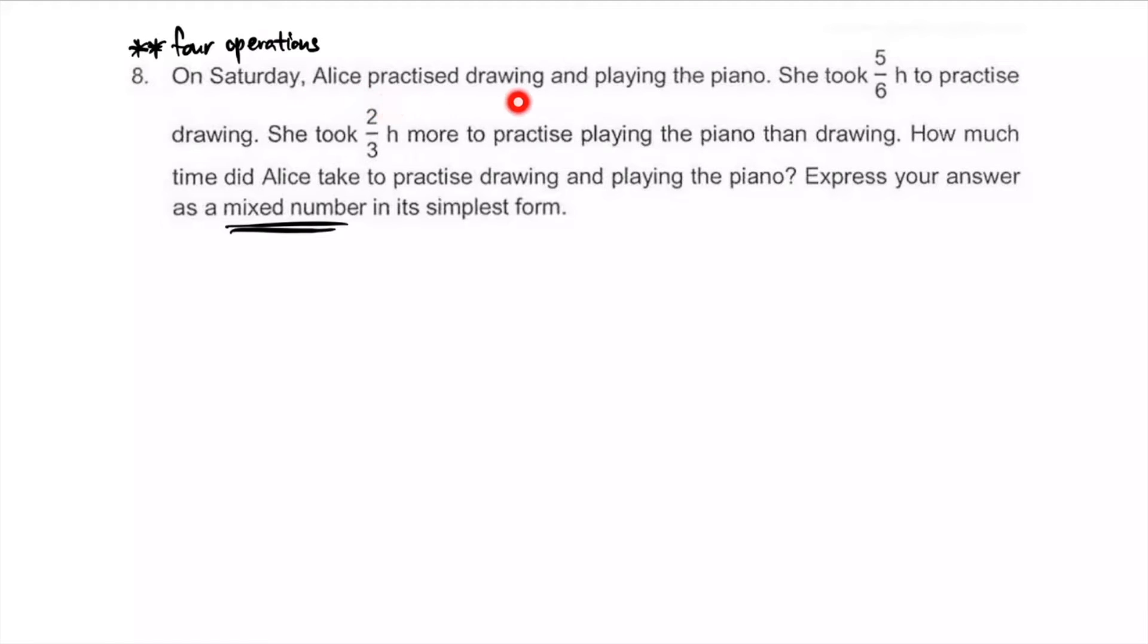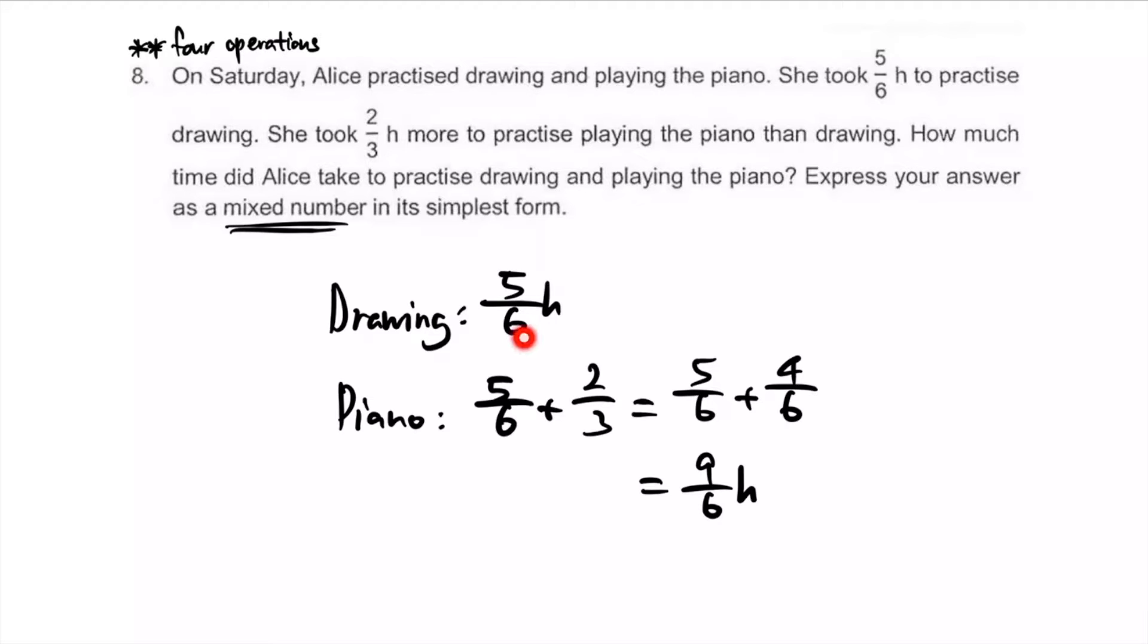On Saturday, Alice practiced drawing and playing piano. She took 5/6 hours to do drawing. She took 2/3 hours more - not 2/3 hours to play piano, but 2/3 hours more. We have to add to the hours spent drawing. So drawing 5/6, piano is whatever spent on drawing plus 2/3. Denominators 6 and 3 - let's turn them both to 6 and add them up. This is on drawing, this is on piano.